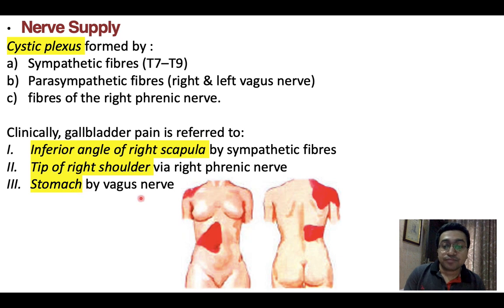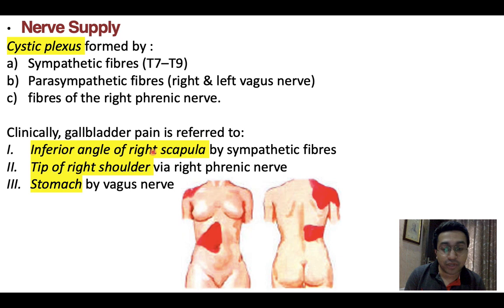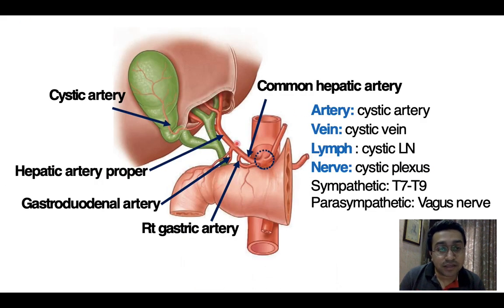Through the vagus, pain is referred to the epigastrium. Through sympathetic nerves, it goes to the inferior angle of the right scapula — the lateral horn of thoracic T7 segment of the spinal cord gives sympathetic fibers to the celiac ganglion through the greater splanchnic nerves, and T7 receives pain fibers from skin over the inferior angle of the scapula. Via the phrenic nerve to the right shoulder, C4 gives fibers to the phrenic nerve and to the supraclavicular nerves. The cystic plexus is formed by sympathetic T7–T9 and parasympathetic fibers from the vagus.